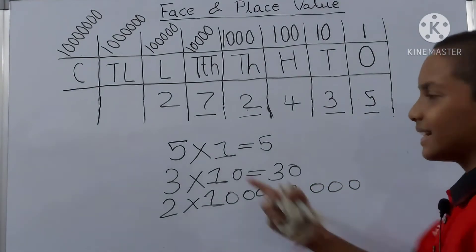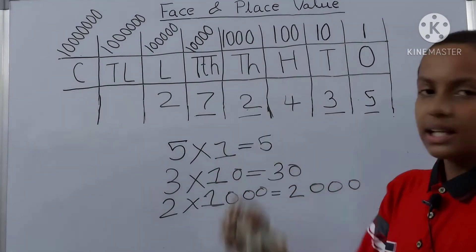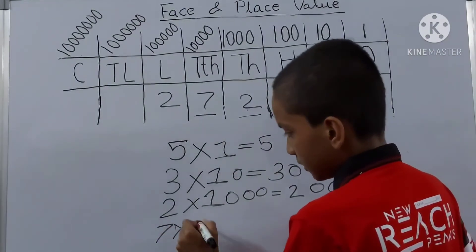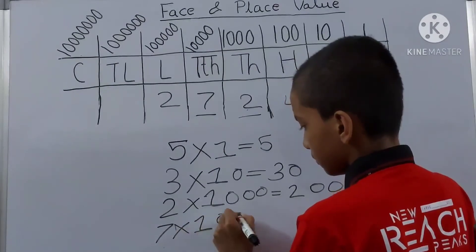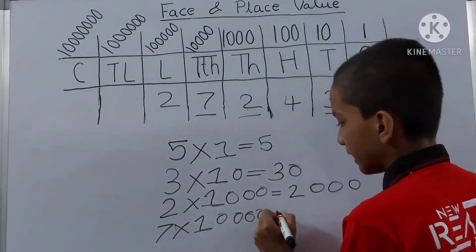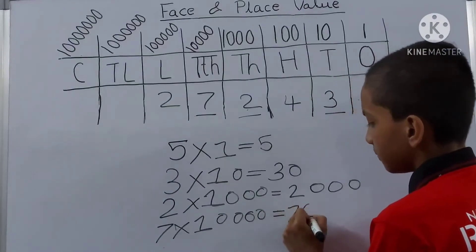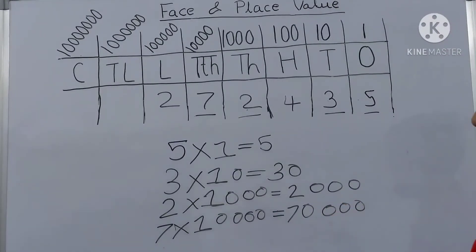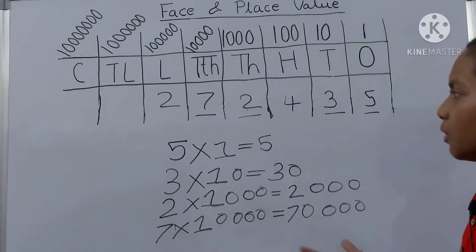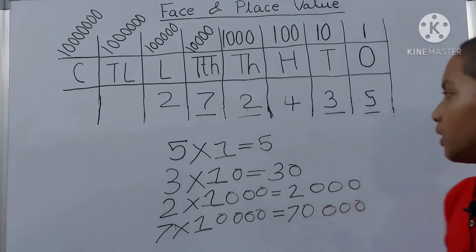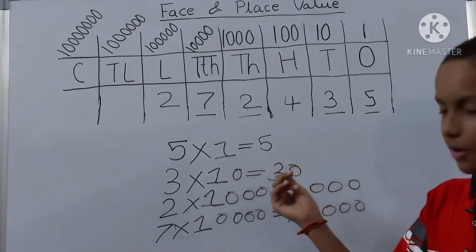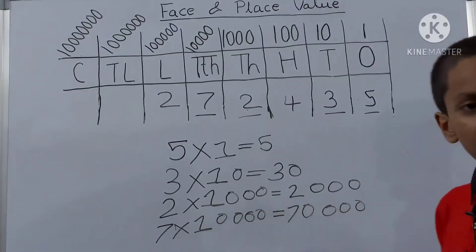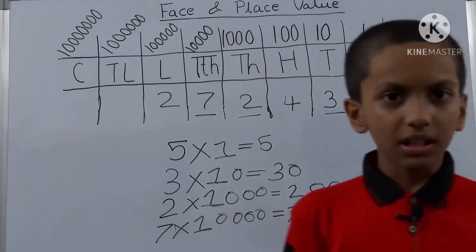Then 7 is on the ten-thousands place, so 7 into 10,000 — that is 70,000. Now we have found the place value of all the underlined digits: 5's place value is 5, 3's place value is 30 because it is on the tens place, 2's place value is 2,000, and 7's place value is 70,000.